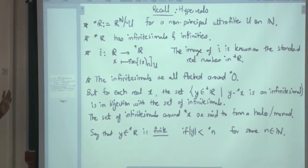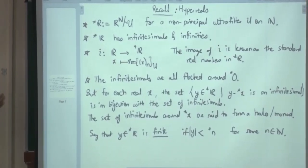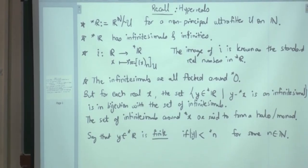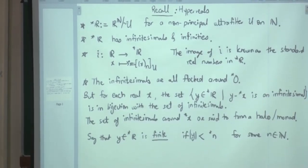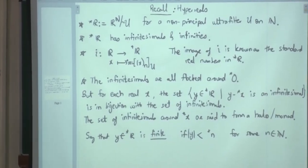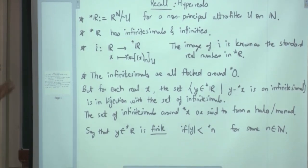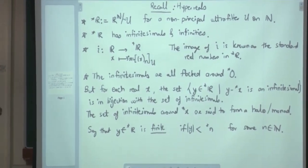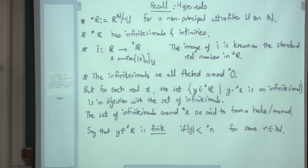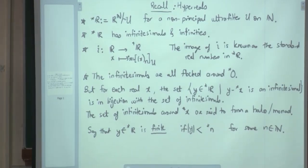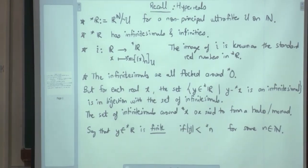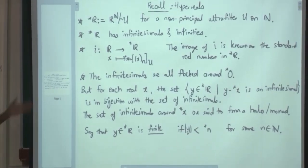What is the absolute value for equivalence classes? The absolute value is the actual absolute value: you choose any representative — any sequence of real numbers which represents y — then you take the modulus of every single entry.